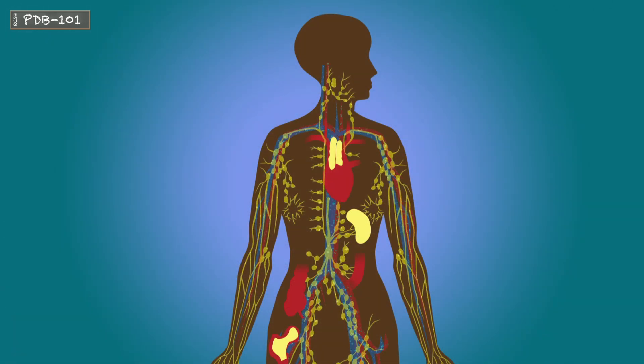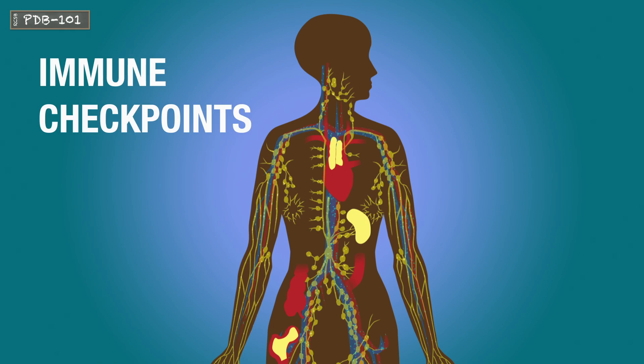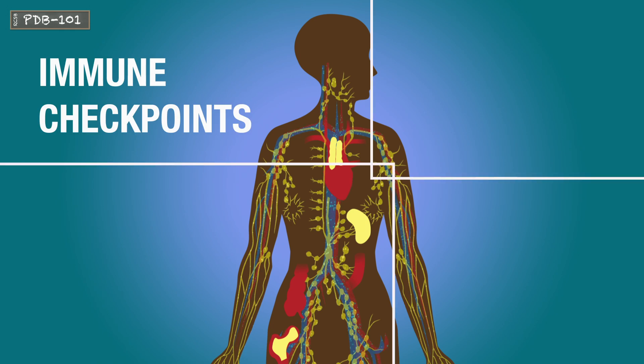An overreactive immune response can lead to unchecked inflammation and even autoimmune diseases. Immune checkpoints can prevent these scenarios by regulating the length of the immune response.